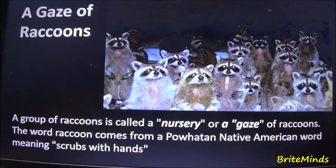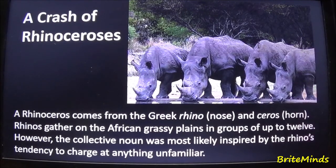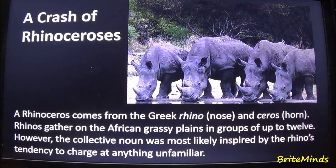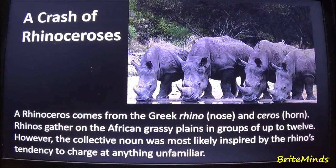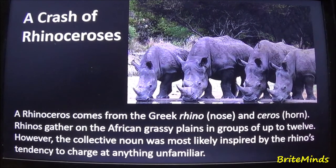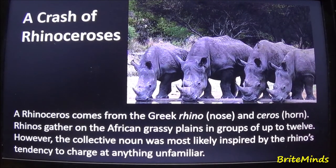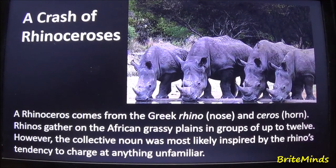The word raccoon comes from the Powhatan Native American word meaning 'scrubs with hands.' A group of rhinoceroses is called a crash of rhinoceroses. Rhinoceros comes from the Greek 'rhino,' meaning nose, and 'ceros,' meaning horn. Rhinos gather on the African grassy plains in groups of up to 12.